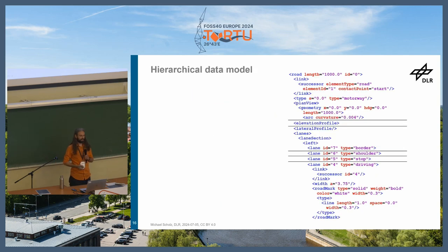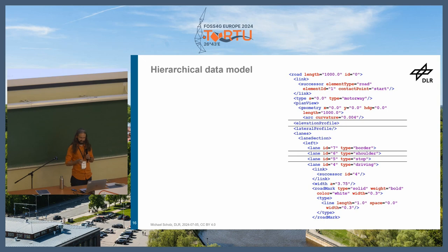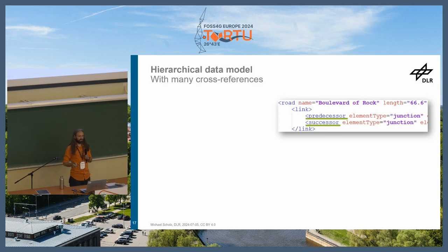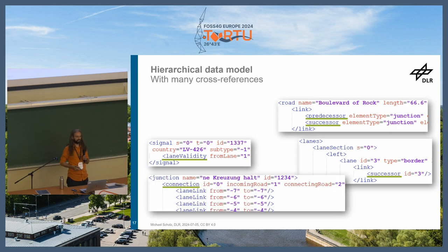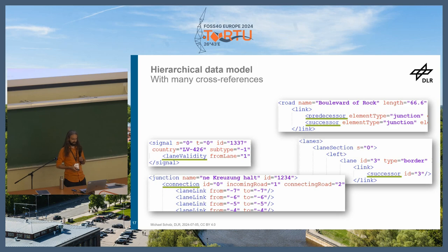It's a hierarchical data model where the core element is always a road, and below that you have geometry tags, elevation profiles, lateral elevation profiles, cross-sections, and lane sections. The lanes have links to predecessors, and there's semantic linking between all elements — links on the road level, links on the lane level, validity of signals, and junction elements with linkage from incoming to outgoing lanes. This semantic structure is all required for the specific application use cases.